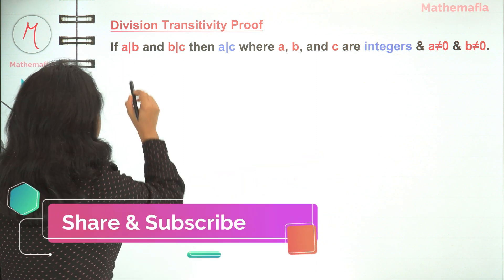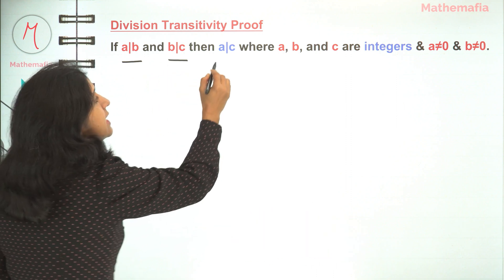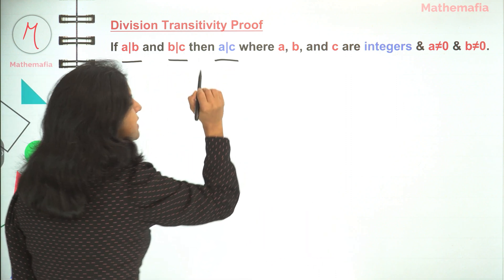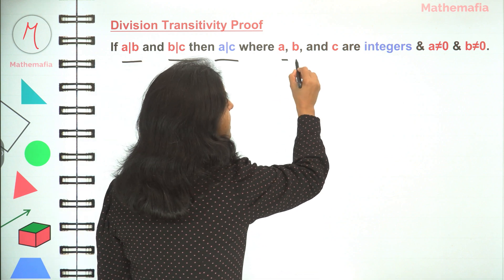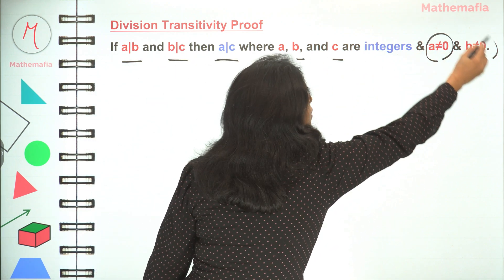This theorem states that if a divides b and b divides c, then a also divides c, where a, b, and c are integers and a≠0 and b≠0.